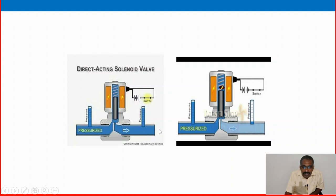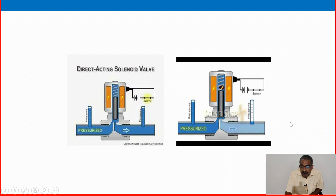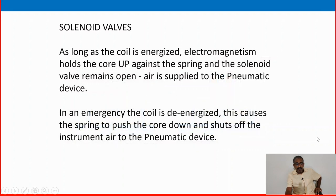Then the pneumatic air passes through the solenoid valve, and that compressive pneumatic air supplies to the ESD valve — to the driver, to the pressure drum and piston. Once the ESD event happens, the logic is activated. The electrical switch is disconnected and de-energized. Immediately the magnet is de-energized and the solenoid valve becomes closed. So pneumatic air cannot go in. Pneumatic air not going means the downstream ESD valve will go to its normal position — whether fail to open or fail to close — that valve will go to its normal position.